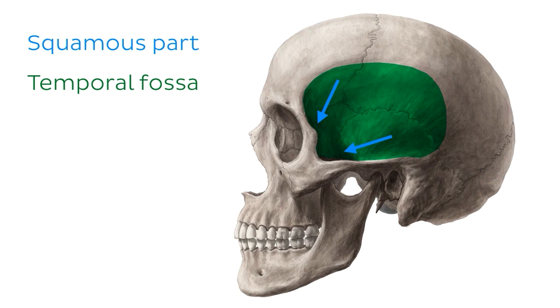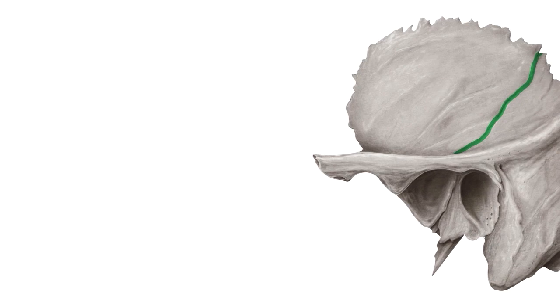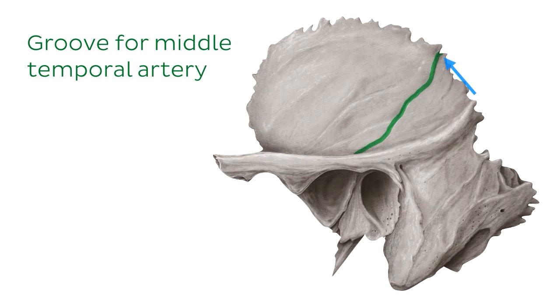On the temporal bone there's a groove for the middle temporal artery. You can see this groove on this image here, which shows the temporal bone from a lateral view, with the anterior side and the posterior side visible. The groove is vertical and located on the anterior side of the squamous part of the temporal bone. Within this groove runs the middle temporal artery, which is a branch of the superficial temporal artery and supplies the temporalis muscle.